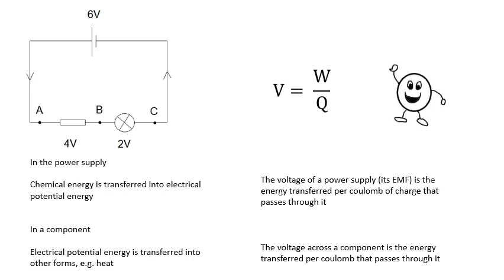There's my little friend — when I teach this in a lesson — Colin the Coulomb and his adventures: gaining potential energy, losing potential energy. How much potential energy is transferred when he goes through a component? How much energy he has at a particular place is called the potential at that place. The potential at A is six volts, at B is two volts, at C is zero volts. Hello Colin!